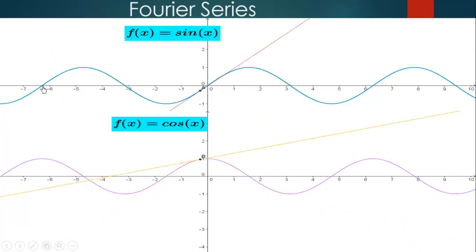So you can see that on the interval negative 2 pi to pi, the function is the same as on the interval 0 to 2 pi. And the same thing applies to the cosine function also.